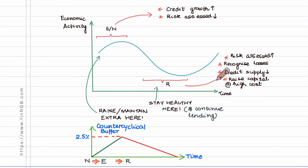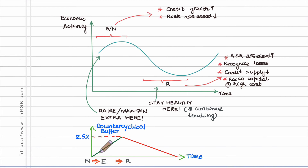So where does the counter cyclical buffer come in? If the supervisor for a particular jurisdiction were to apply a counter cyclical buffer requirement during the expansionary period —